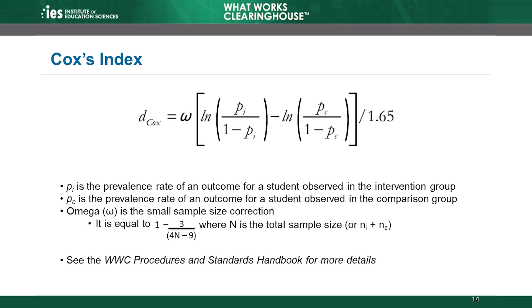For dichotomous variables — those with only two possible categories — the WWC uses a version of Cox's index to calculate equivalence. Cox's index is designed to produce an effect size measure that is comparable to Hedges G, but the formula relies on more complex mathematical functions. The formula includes logarithms, written as Ln, and a calculation called an odds ratio. Cox's index applies a logarithm to the odds ratio for the treatment group, subtracts the same for the comparison group, and then divides by 1.65. Like Hedges G, it includes a small sample size correction denoted by omega. You'll find more information about this formula in the WWC Procedures and Standards Handbook.